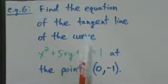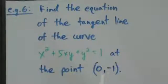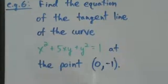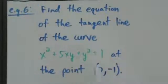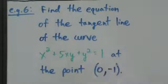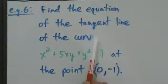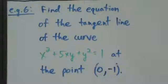We're finding the equation of a tangent line, and in general, when you want to find the equation of any line, what you need is any point on the line and the slope of that line. We're given a point — we're told this line is tangent to the curve at this point, so the line goes through that point. Now we just have to find the slope of the line, and to do that we find the derivative, because the slope of the tangent line is the same thing as the derivative.